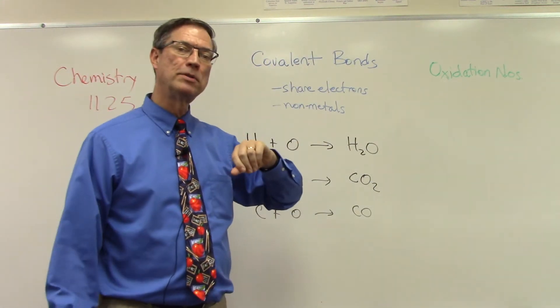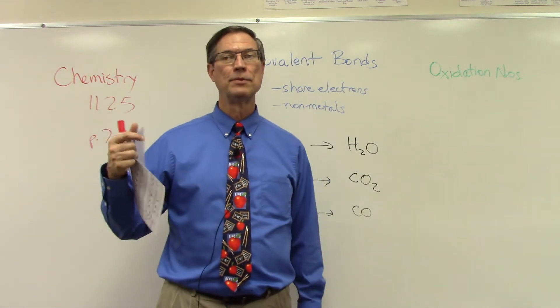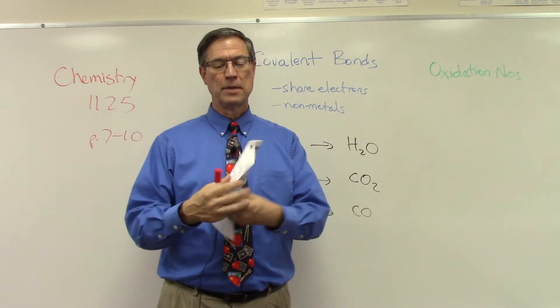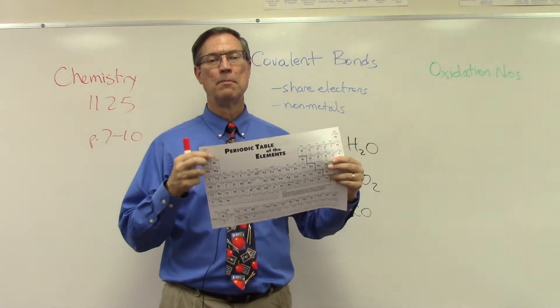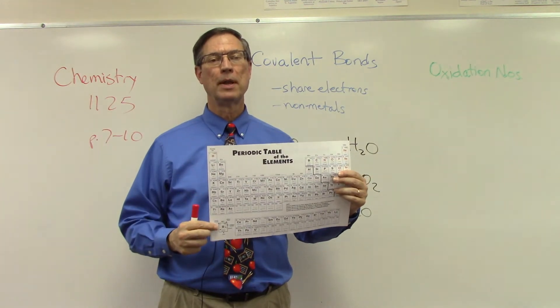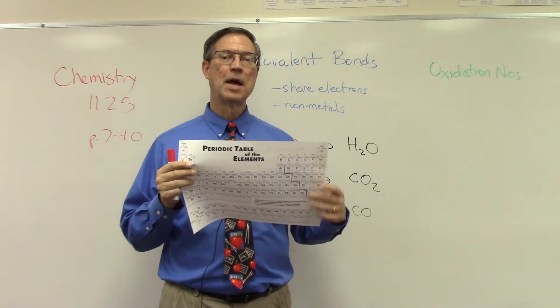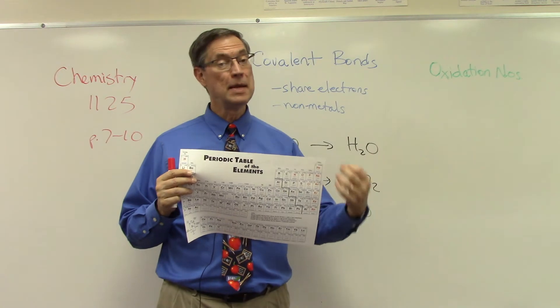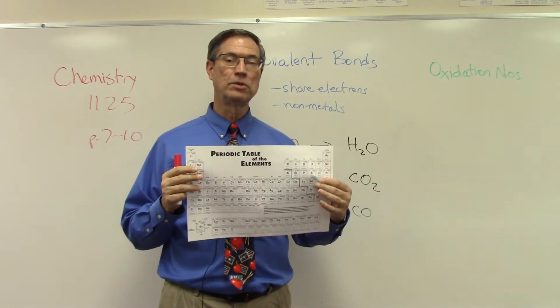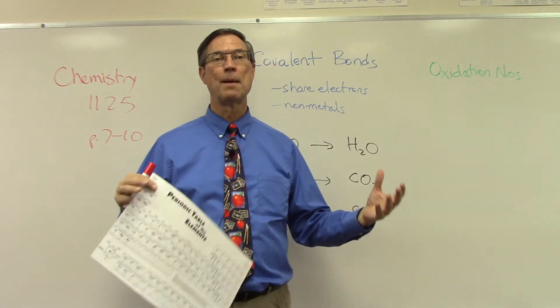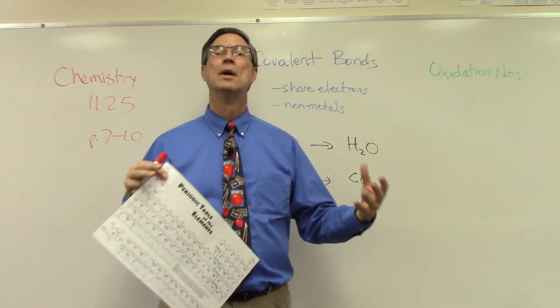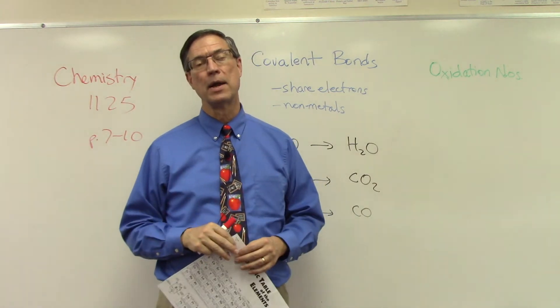So remember, ionic bonds form when an atom definitely gives up an electron, as in the metals, they give up an electron. And then some of these non-metals over here willingly gain electrons. They become positively charged, negatively charged. The opposite charges ions attract together. We call that an ionic bond.